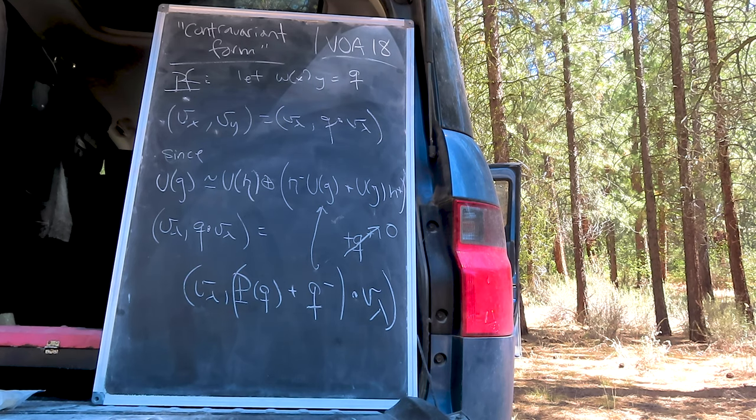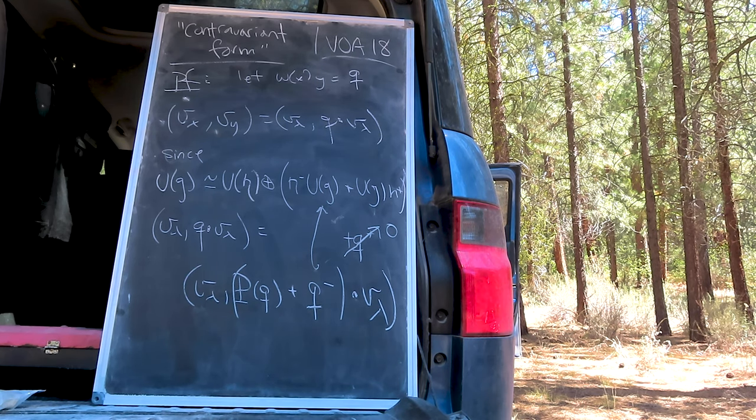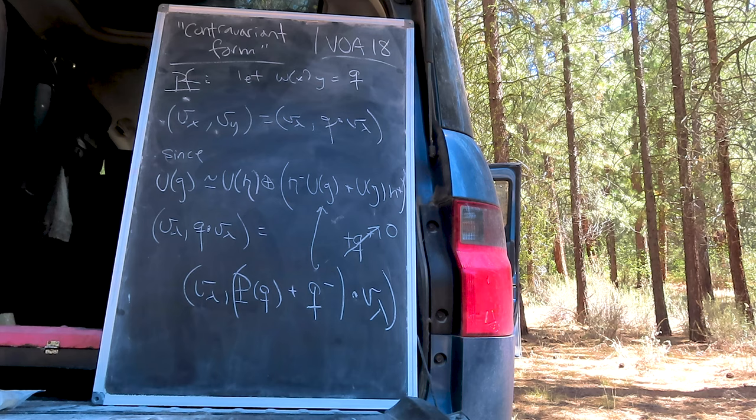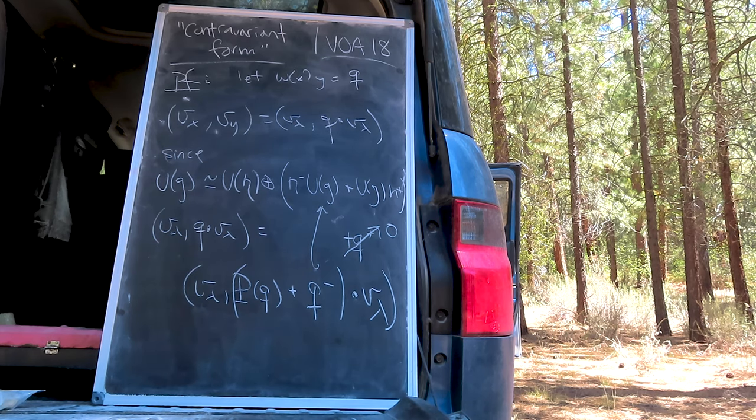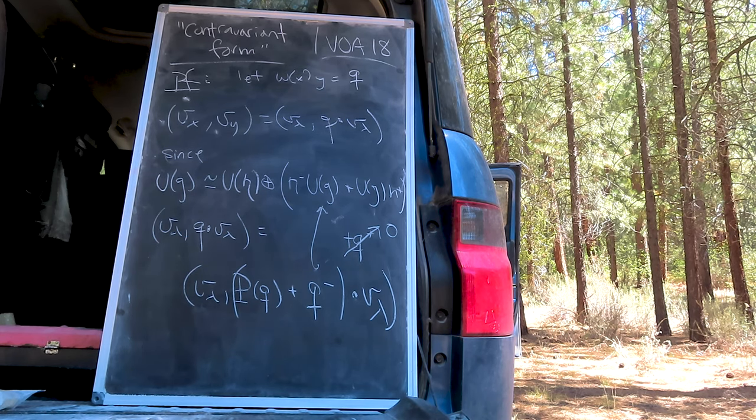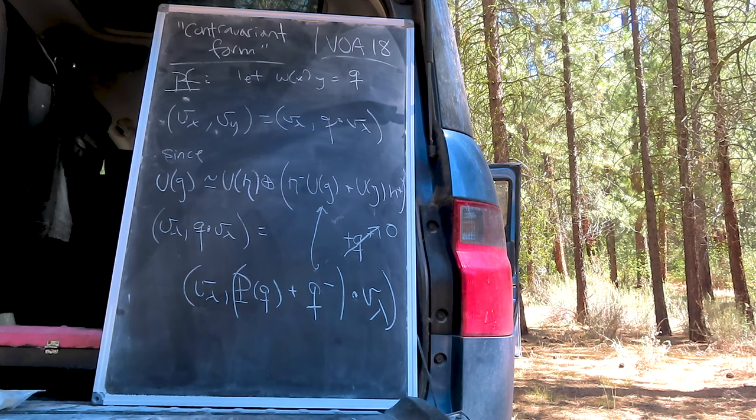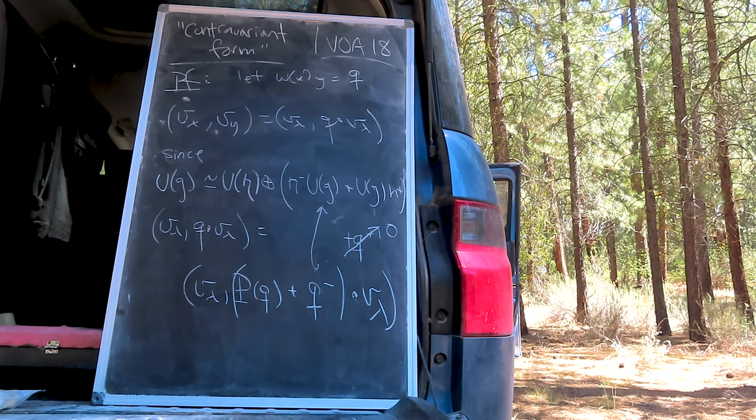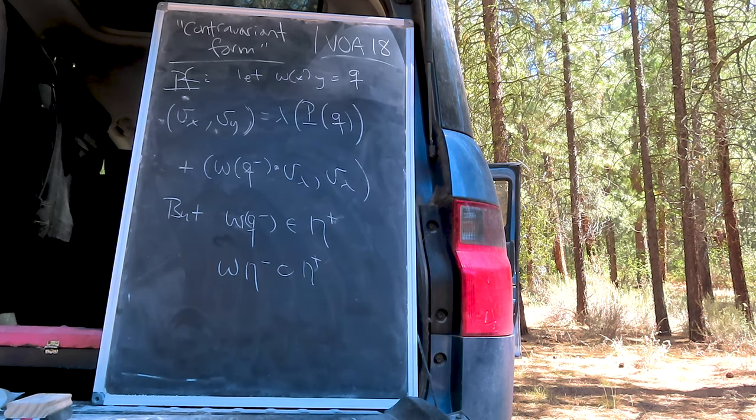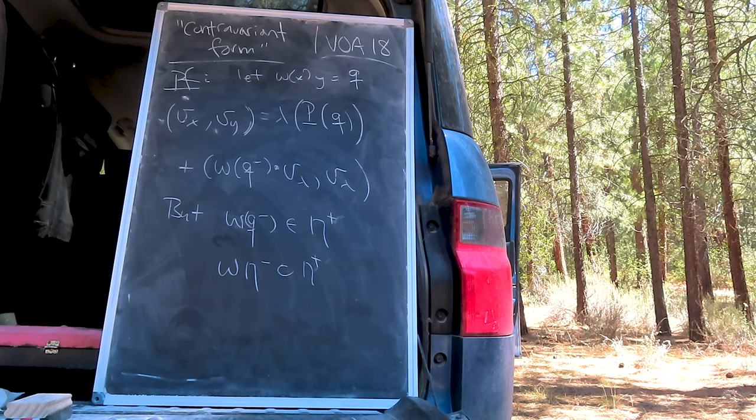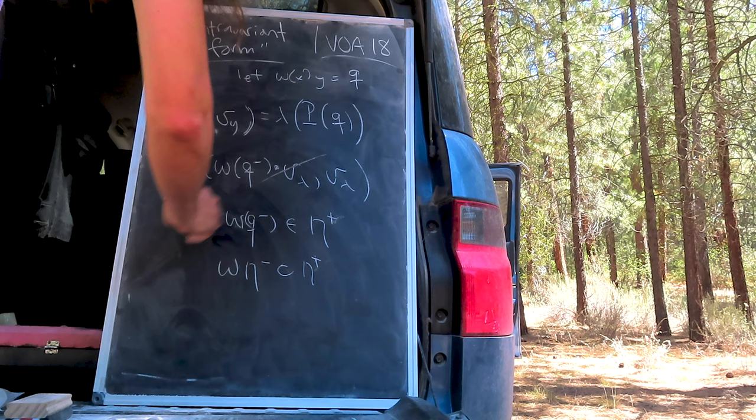The N plus-ish left action obviously causes the product to vanish, so we're left with the projection to Q minus. But, because of the dual nature of the bilinear product, we can push the Q minus to the left-hand side, transforming it into a left action of N plus via the anti-involution, which also vanishes when acting upon V Lambda.